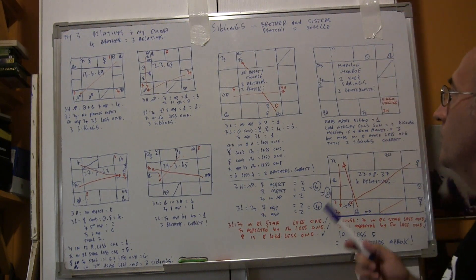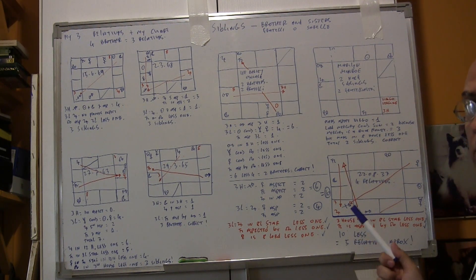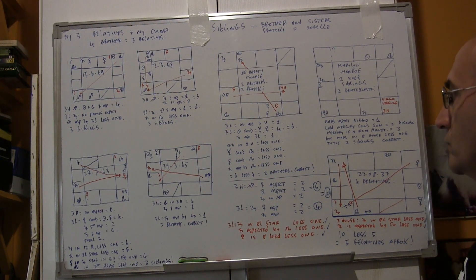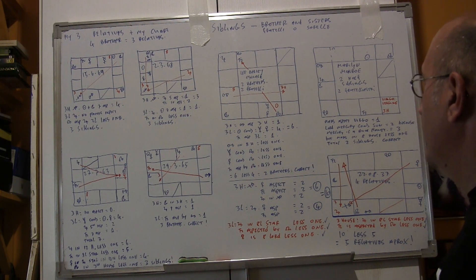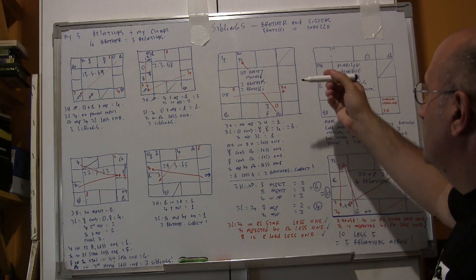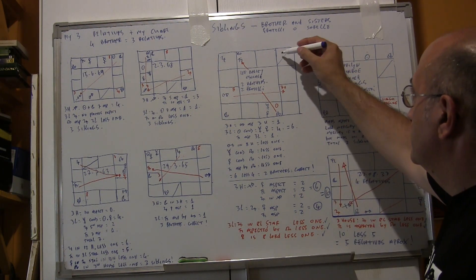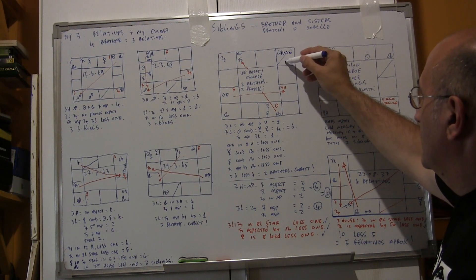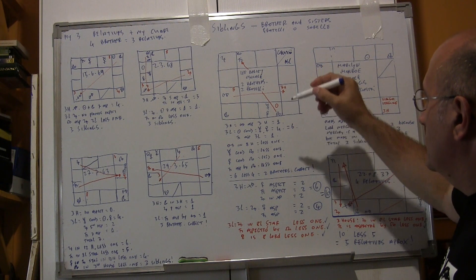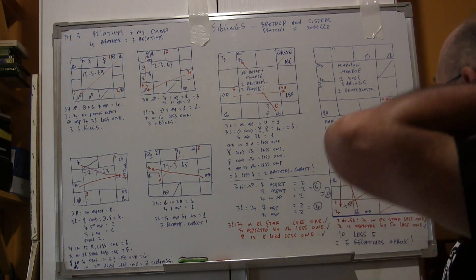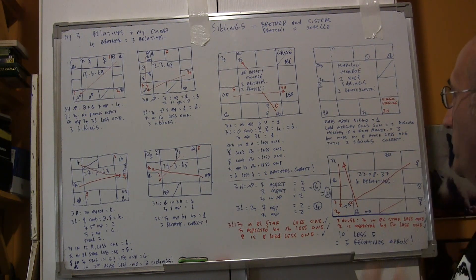Let's start with Lee Harvey Oswald — he had two brothers according to Wikipedia. The ascendant is Gemini and the third house is Leo. We will start with the third house.